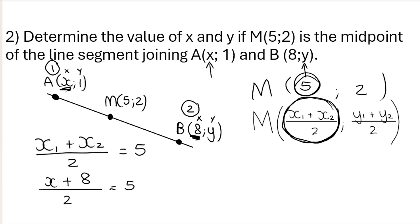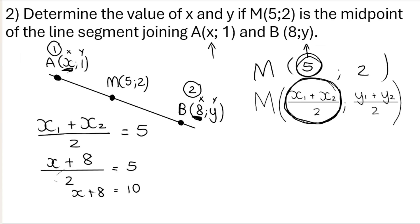Now all we need to do is some algebra, inverse operations. We're going to say what's the inverse of divide by 2? Multiply by 2. So we're going to go 5 multiplied by 2, that gives me 10. So I've got x plus 8 is equal to 10. And then I am adding 8, the opposite of plus 8, inverse operation is minus 8, 10 minus 8 is 2. So x is 2. In other words, my coordinate for A, instead of writing x and 1, we now know that it is 2 and 1.